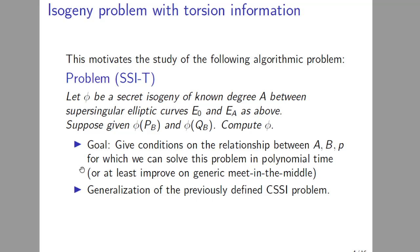This motivates the following algorithmic problem, which we call the SSI-T problem. Let φ be a secret isogeny of known degree A between two supersingular elliptic curves E_0 and E_A. Suppose you also know φ(P_B) and φ(Q_B), where P_B and Q_B generate the B-torsion, and the problem is to compute φ. Our goal is to give certain conditions on A, B, and p, where p is the characteristic of the base field, for which we can solve this problem in polynomial time, or at least faster than generic algorithms. This is a generalization of the previously defined CSSI problem.